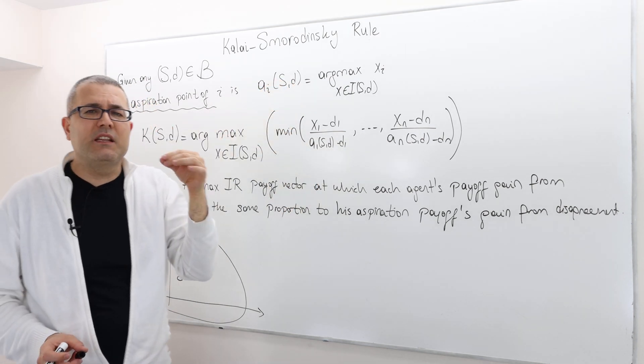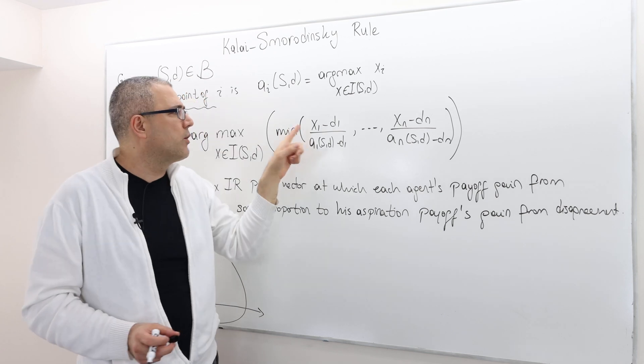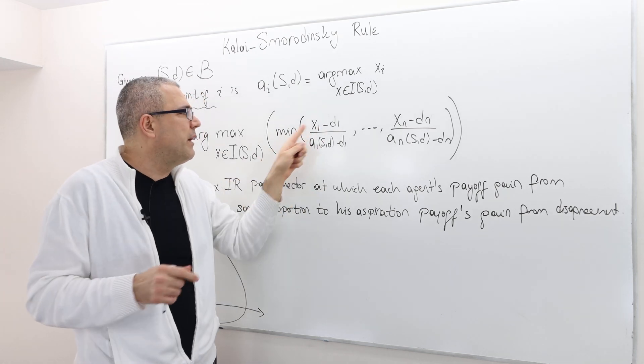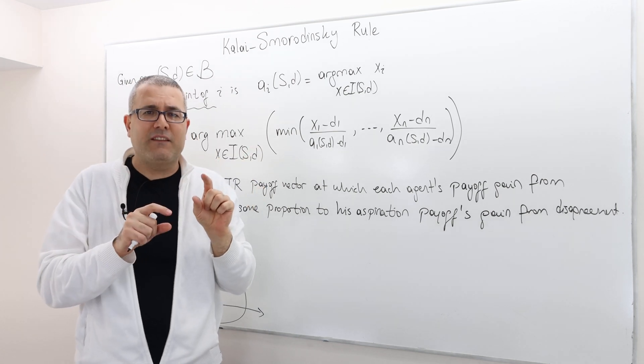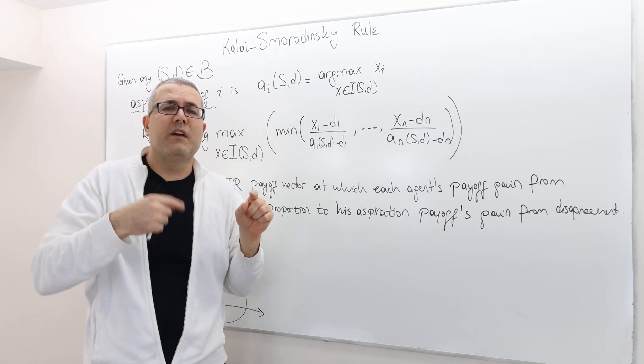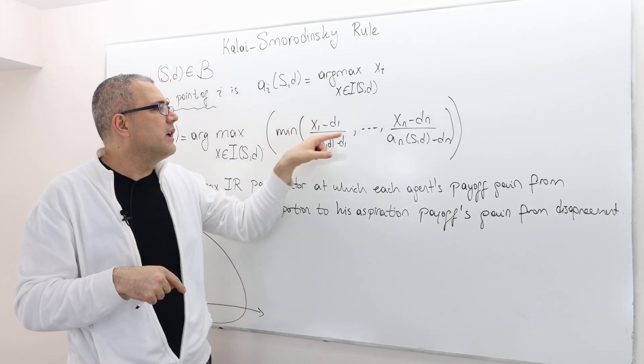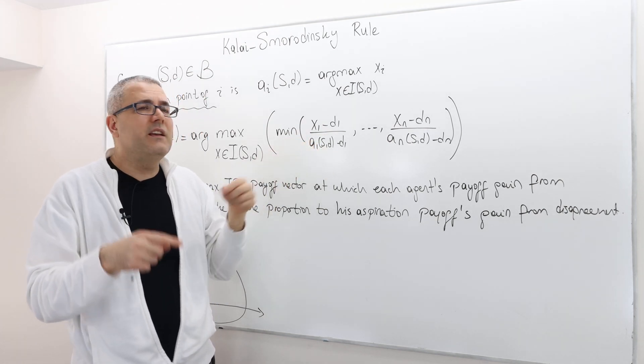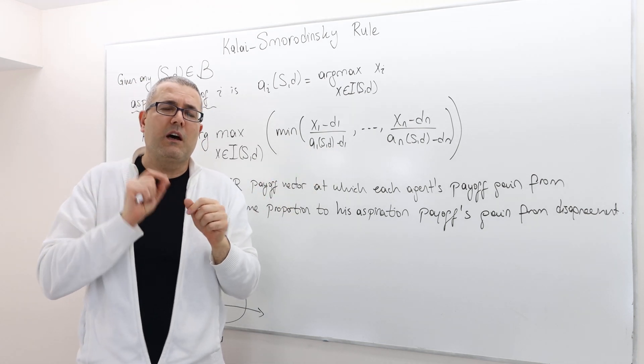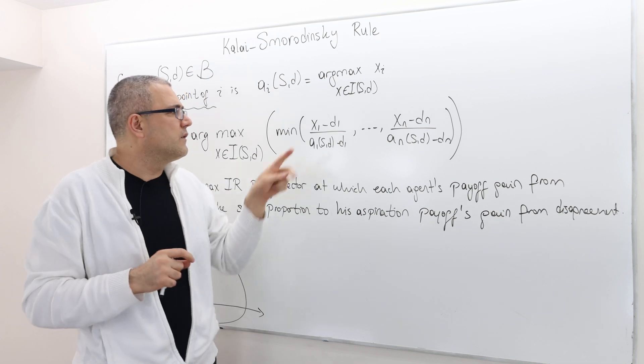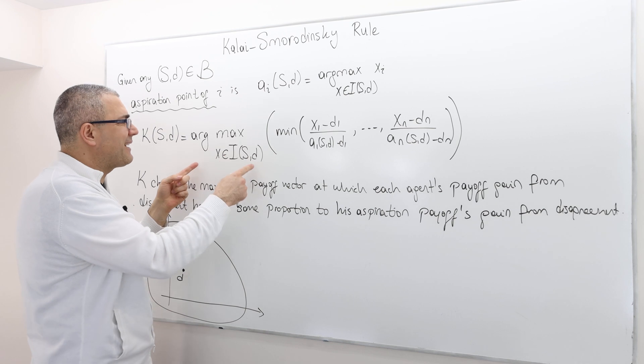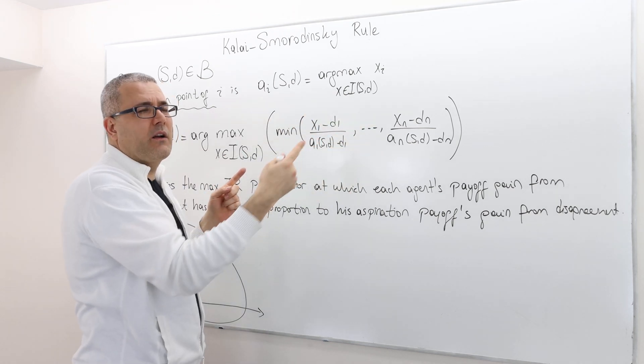X1 is how much payoff player 1 is going to get minus D1, which is the additional payoff he's going to get from the solution on top of his disagreement point, in ratio to his aspiration point in relation to his disagreement point. We would like to keep this ratio's minimum when we maximize.